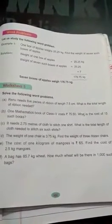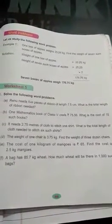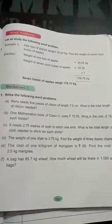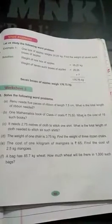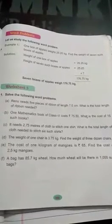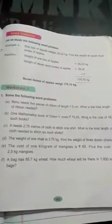To two dozen mein kitne honge jayenge. If you multiply 12 with the 2, that is 24. Aur three dozen mein kitne honge jayenge. If you multiply 12 with the 3, it become 36. To isko better samajhne ke liye, aap notebook pe aaiye.